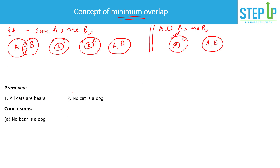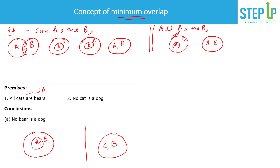Given two premises — 'all cats are bears' and 'no cat is a dog' — we are asked to conclude whether 'no bear is a dog.' First, 'all cats are bears' is a universal affirmative statement, so there are two possibilities: cats inside bears, or cats equal to bears. The second statement, 'no cat is a dog,' is a universal negative statement, meaning cat and dog are two disjoint sets.